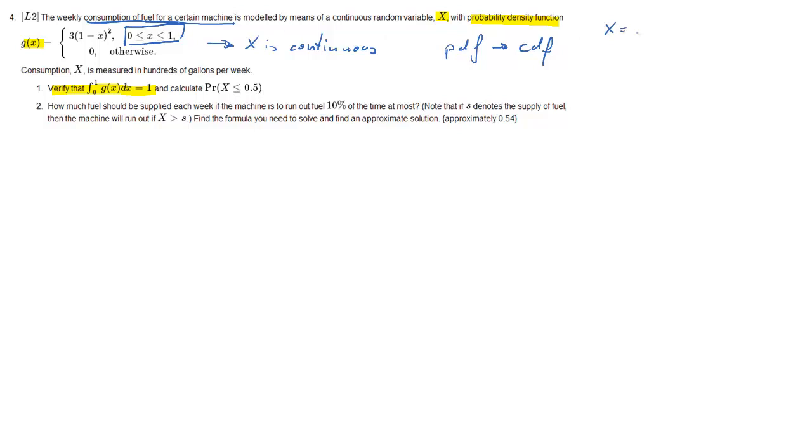Now what does that mean, consumption for a certain machine? That's what x is in this question. So x equal to 0 means no consumption at all. x equal to 1 we can think of this as using a full tank, 1 for a full tank. So it's not an absolute consumption but relative to the tank size.